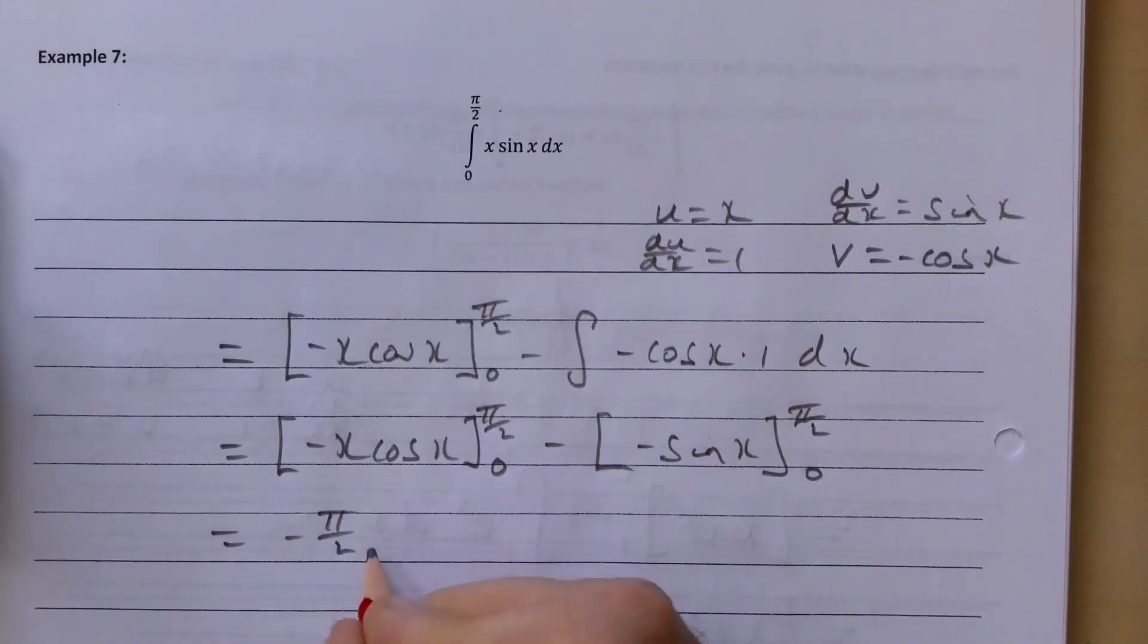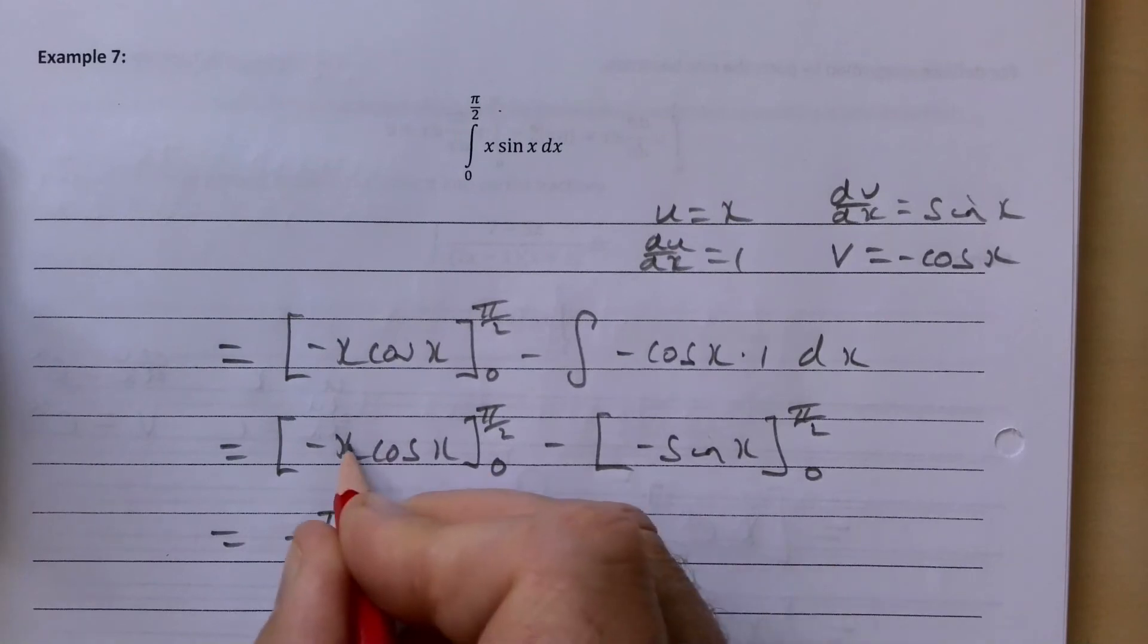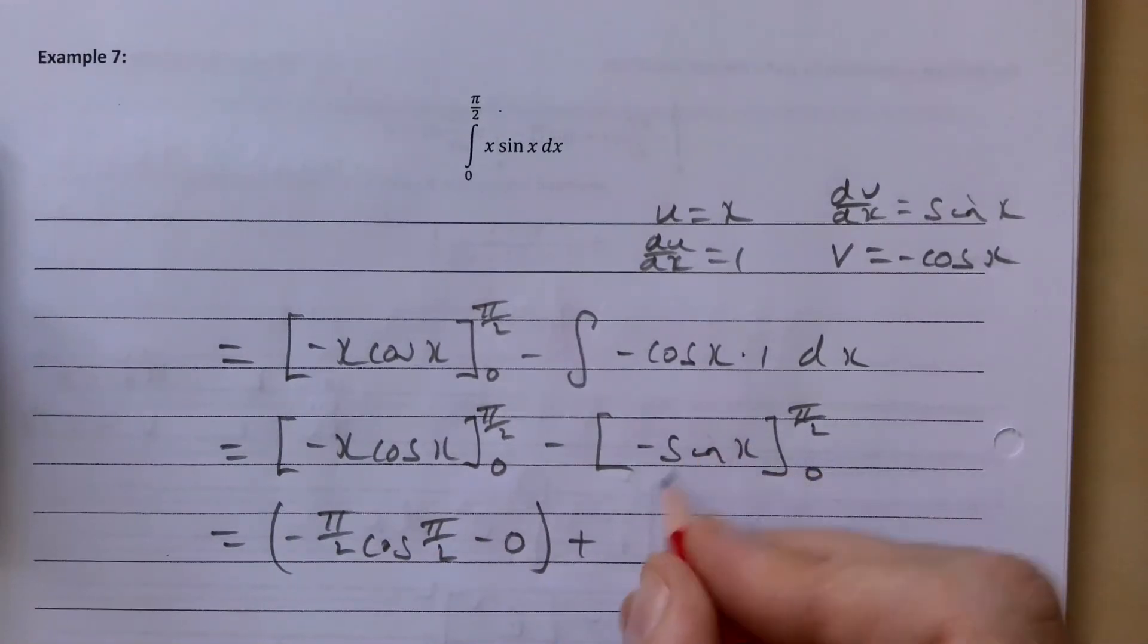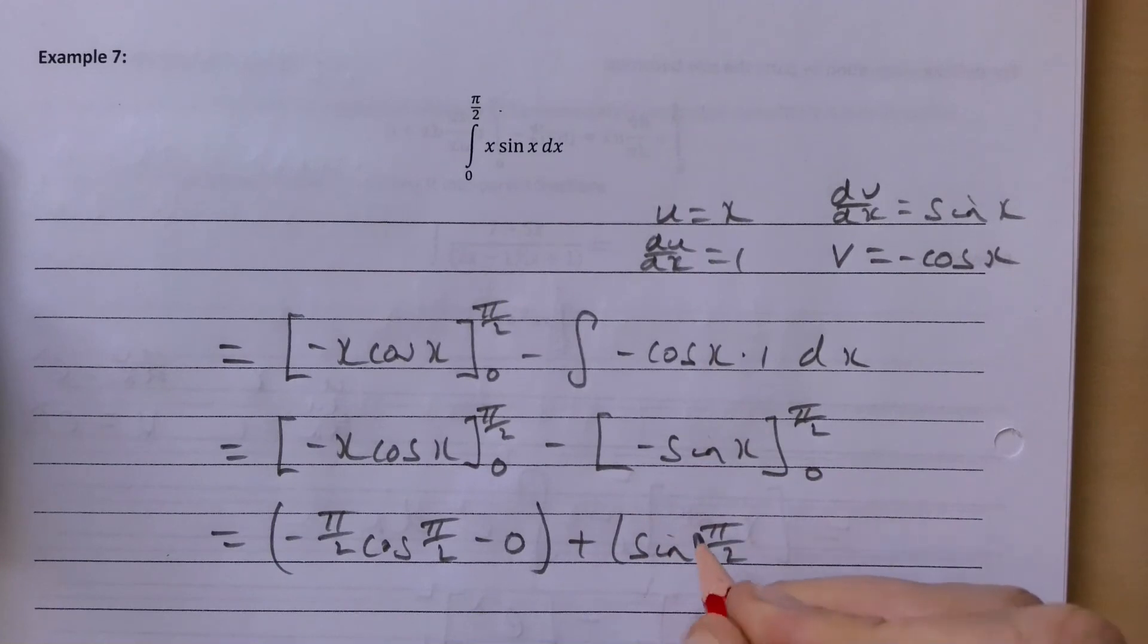And obviously subbing in 0 doesn't matter what's there, so that bit's just going to be a 0. And subbing in we're going to get sin pi over 2 take away 0.